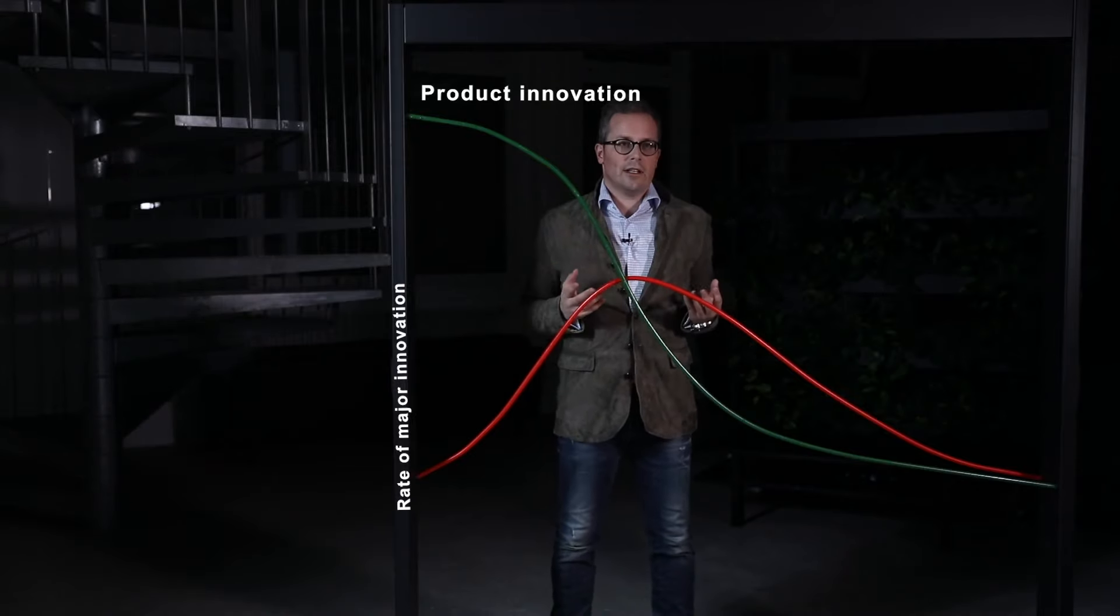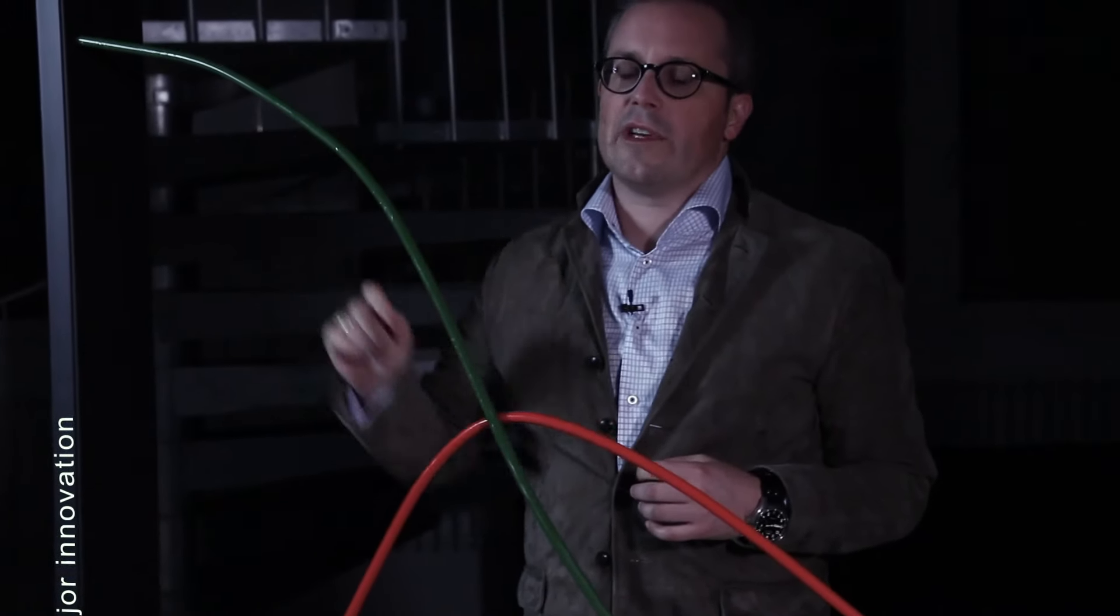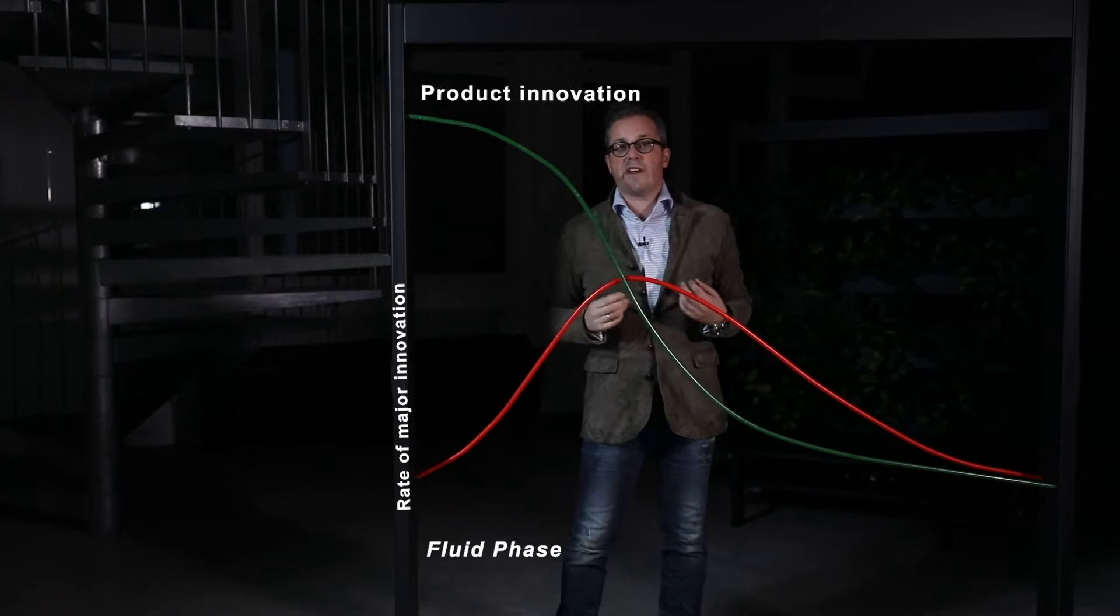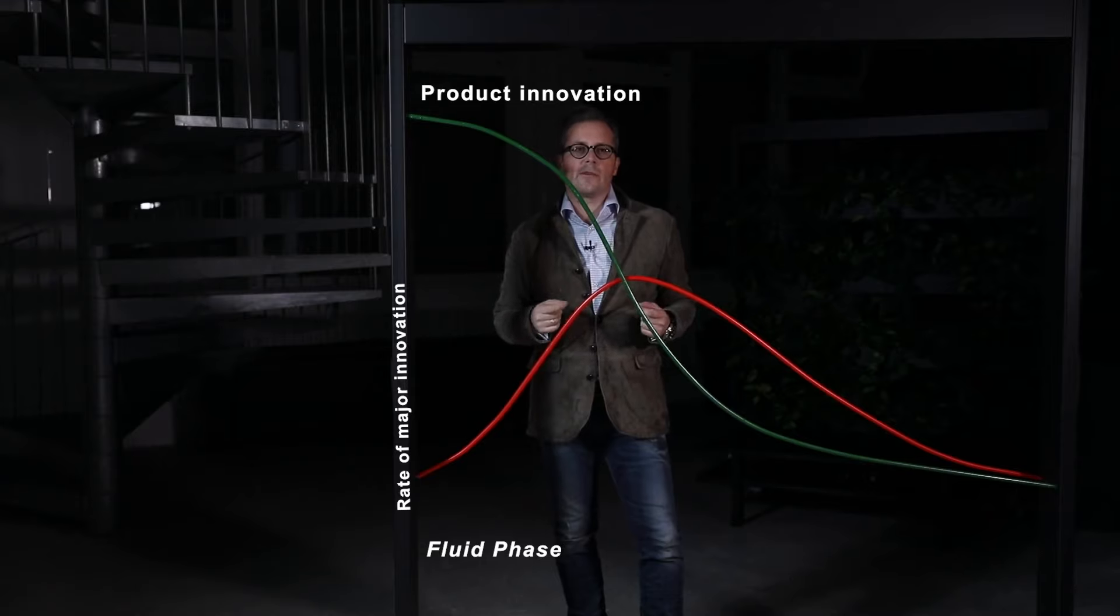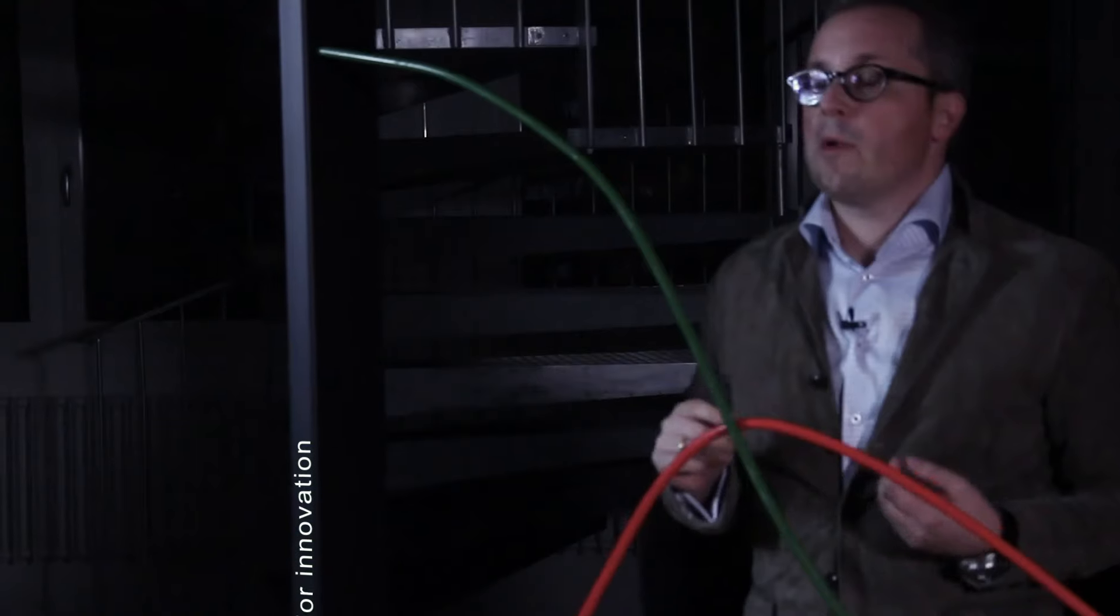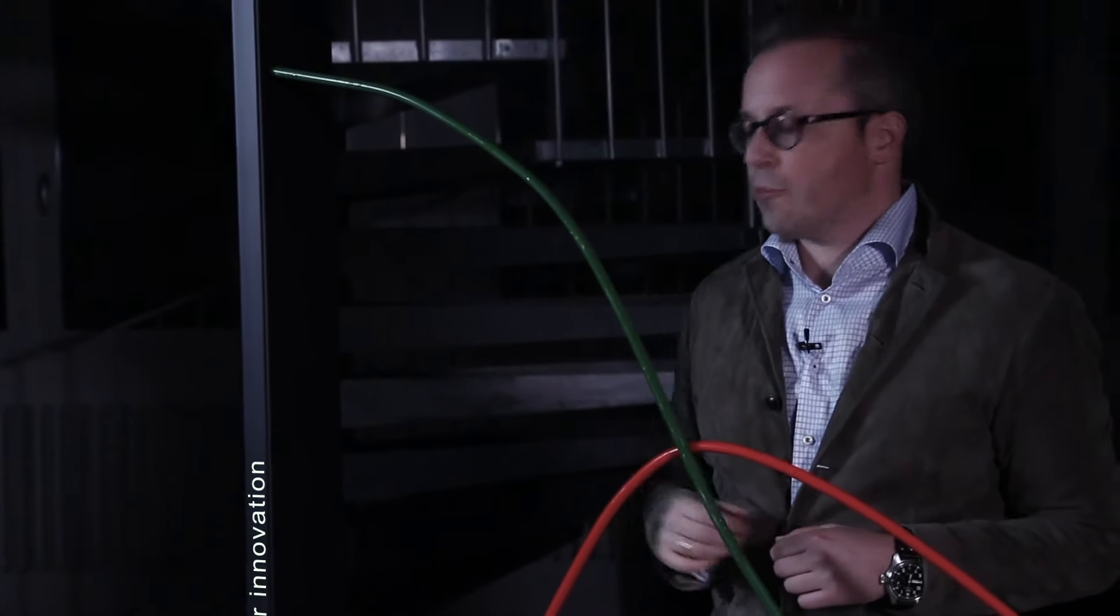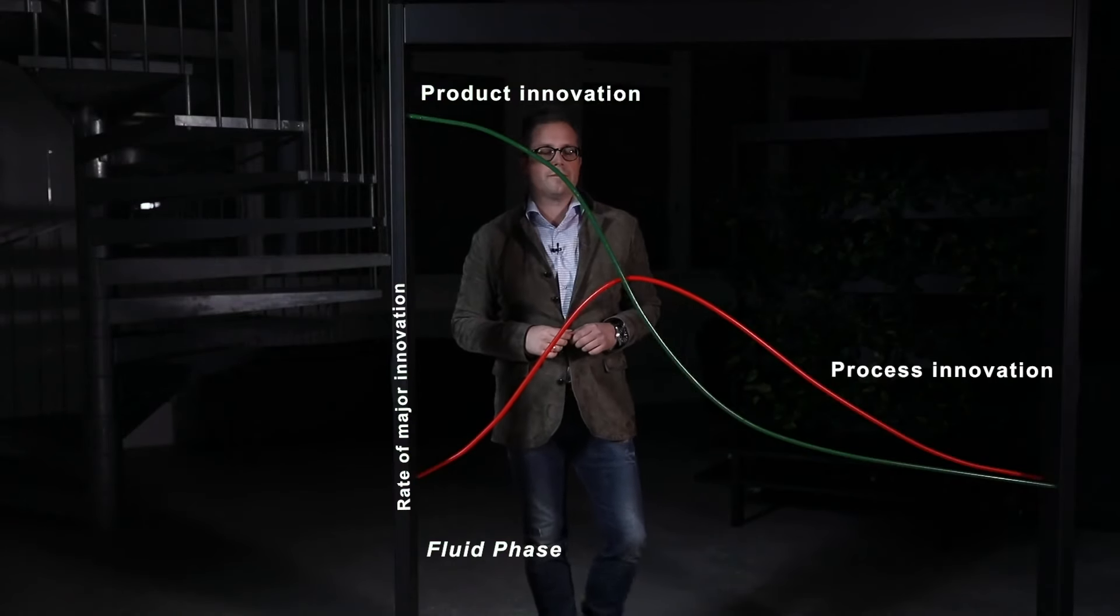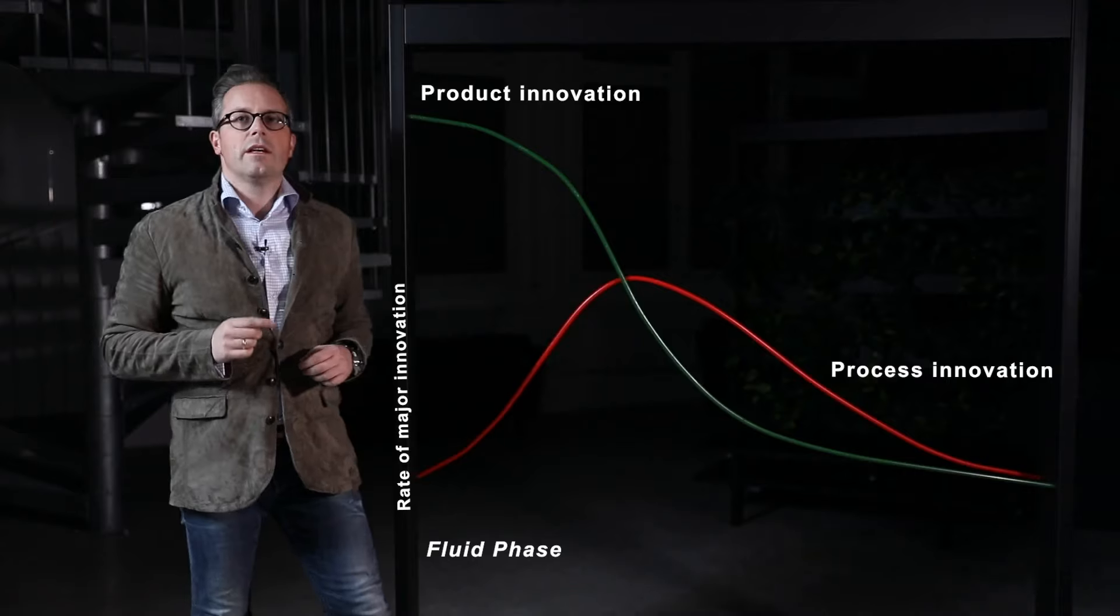He correctly describes that the rate of product innovation in a product class or industry is usually highest during its initial, formative phase. During this fluid phase, a great deal of experimentation with product design and operational characteristics takes place amongst competitors, and much less attention is given to the processes by which products are made. As a consequence, the rate of process innovation is significantly less rapid at this stage.